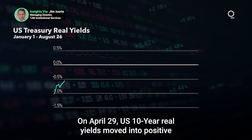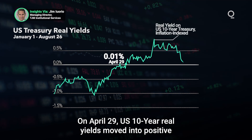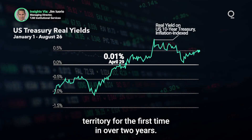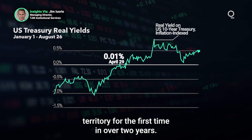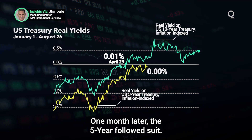On April 29th, U.S. 10-year real yields moved into positive territory for the first time in over two years. One month later, the five-year followed suit.